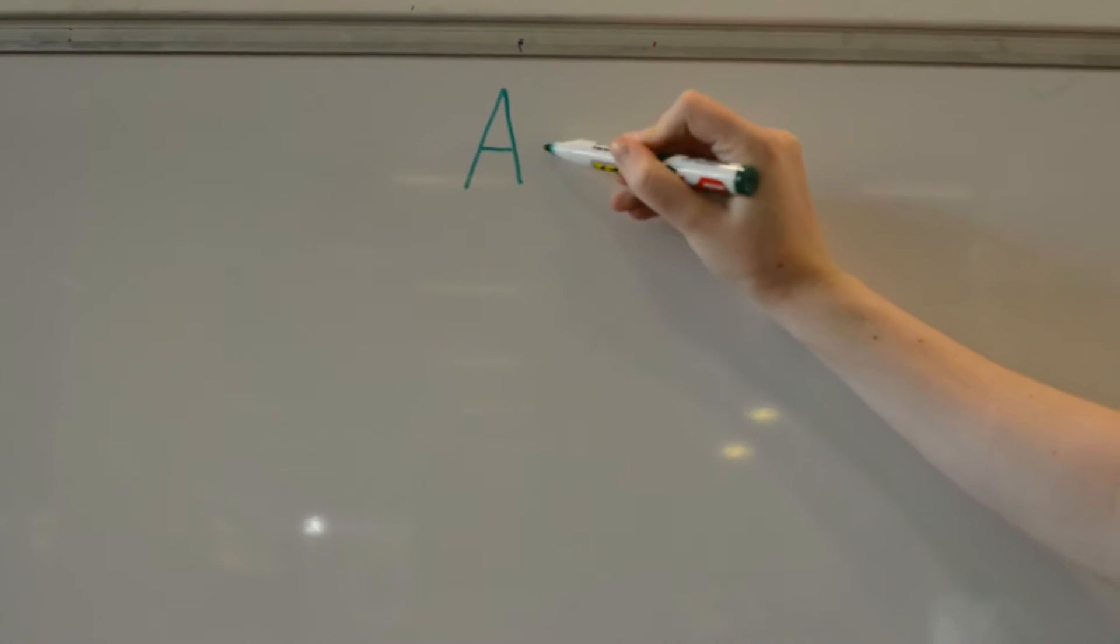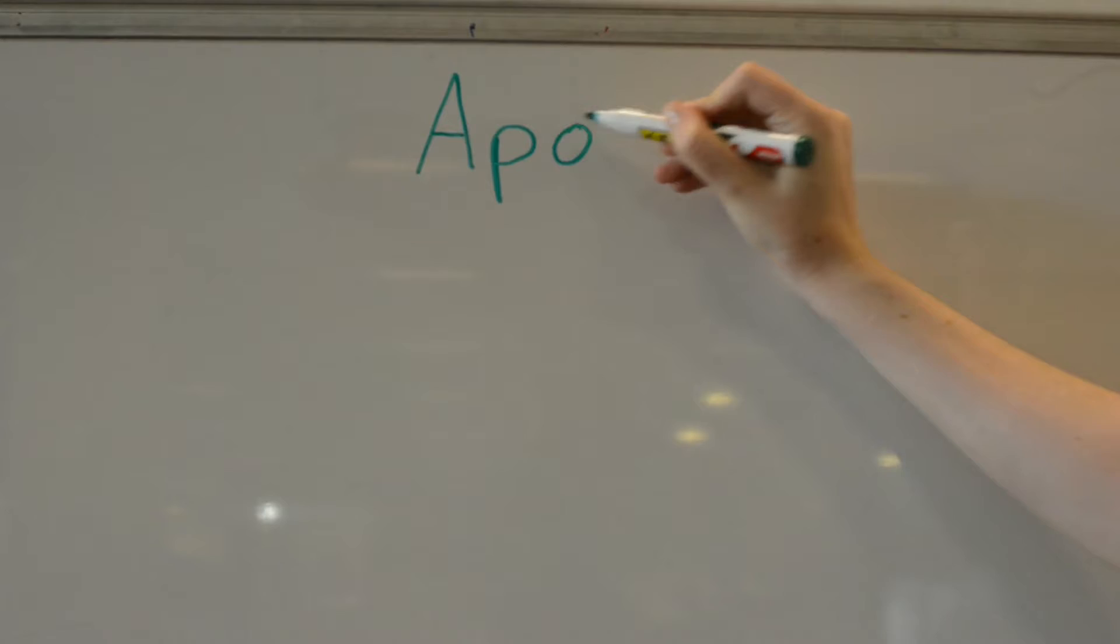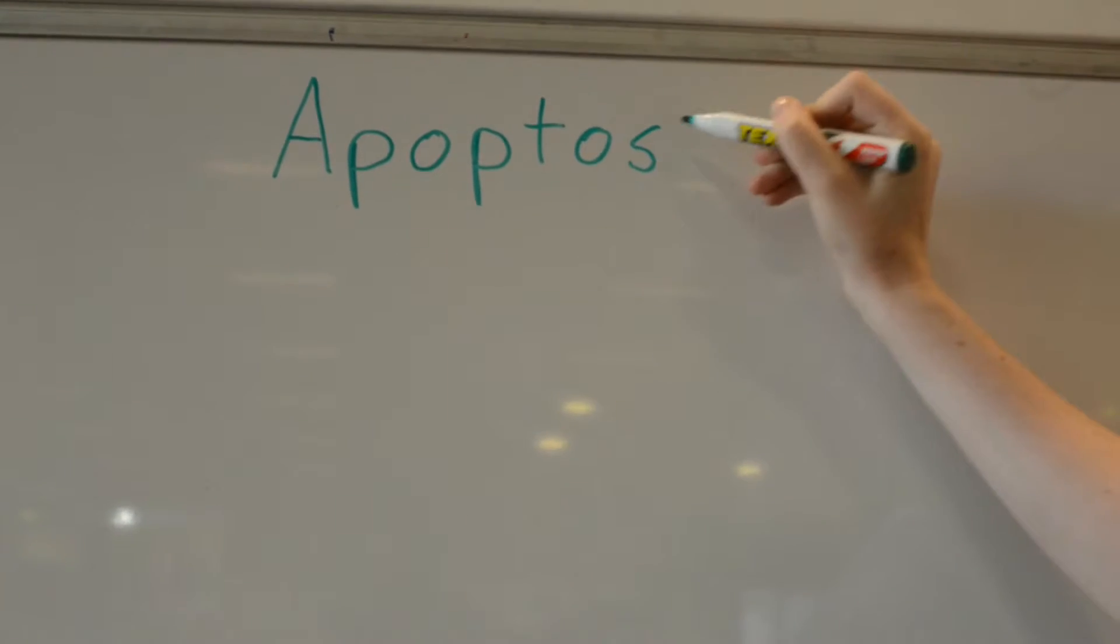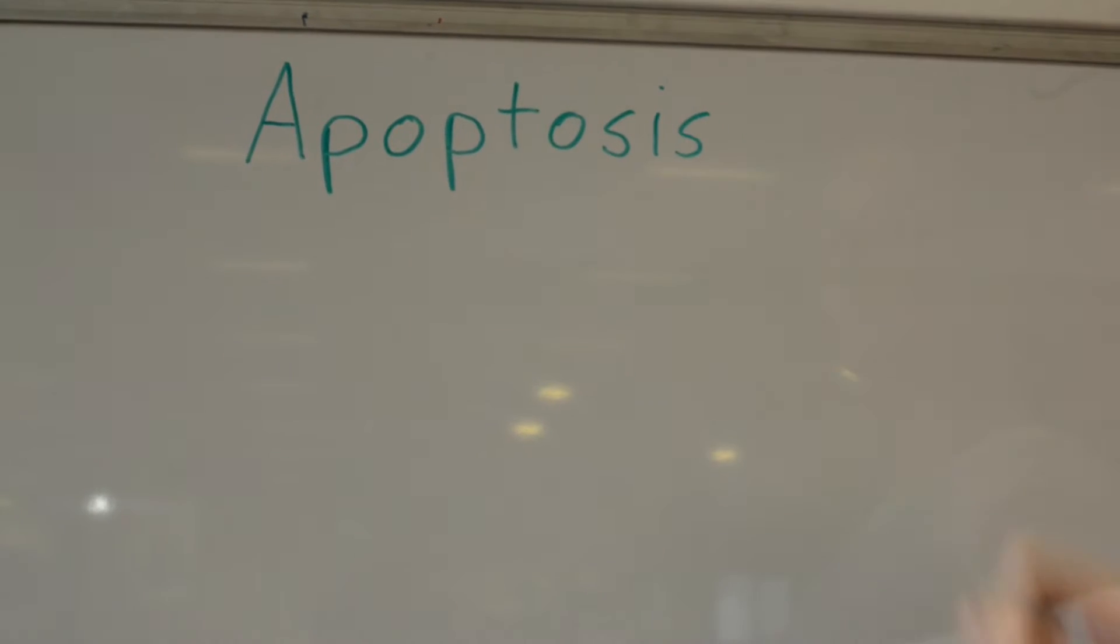Apoptosis is an essential part of the cell cycle. It is a programmed cell death that occurs during development and normal biological processes of cells.